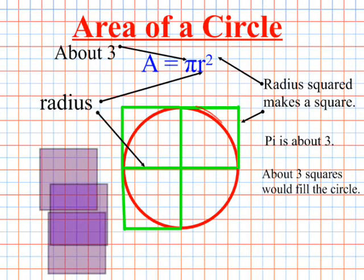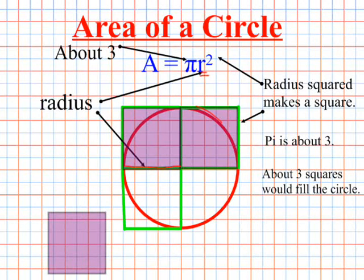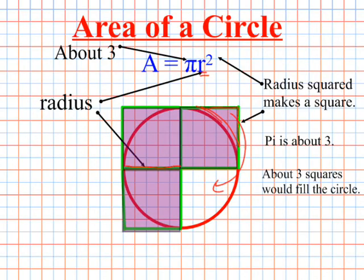So let's take a closer look at this formula and pull it apart a little bit. Let's look at radius squared. Here's our radius — if you square the radius, you end up with a square. Pi is approximately 3, so we would have 3 squares. If you take all the excess outside of the circle and put it here, it would fill in the remaining quarter of that circle. That's kind of why this formula works for finding the area of a circle.